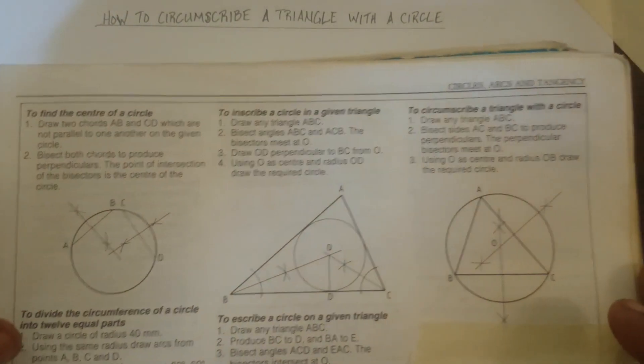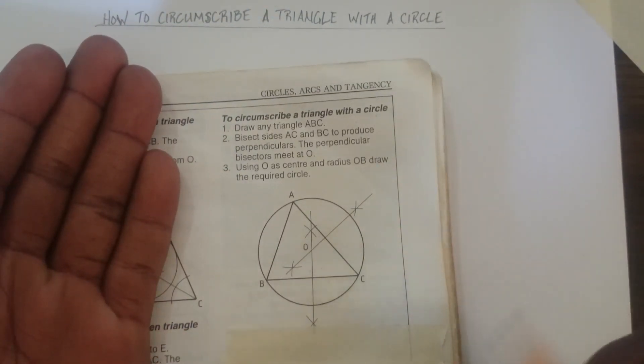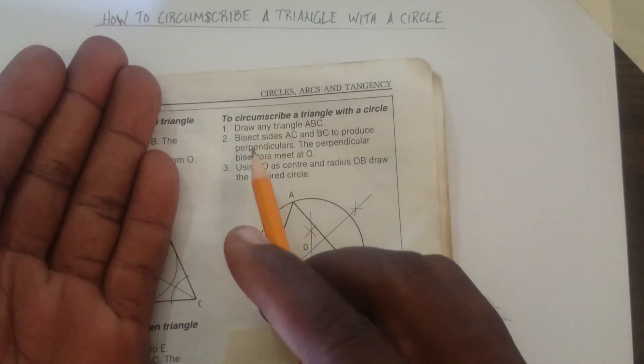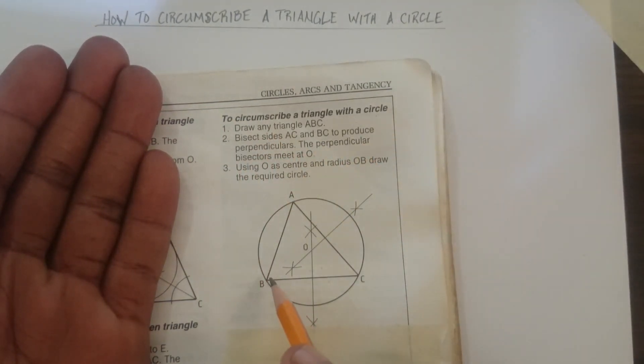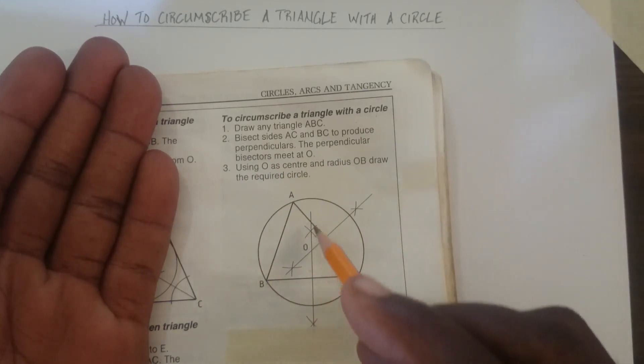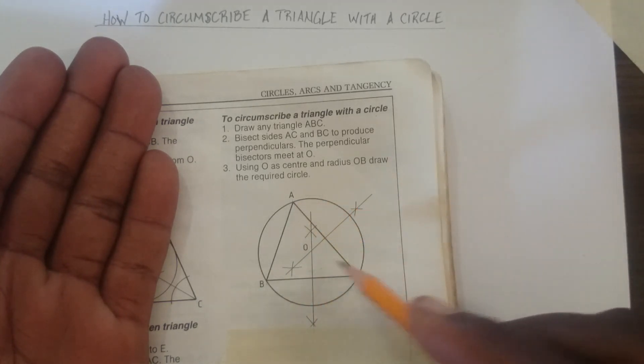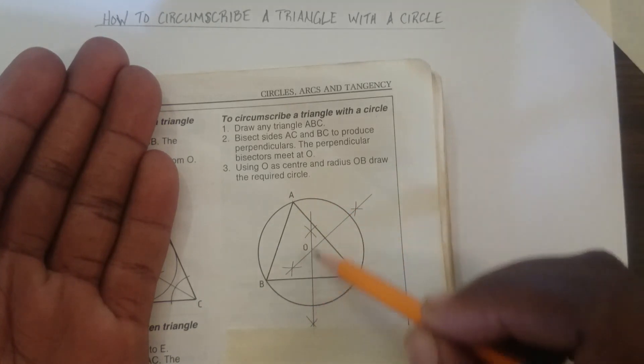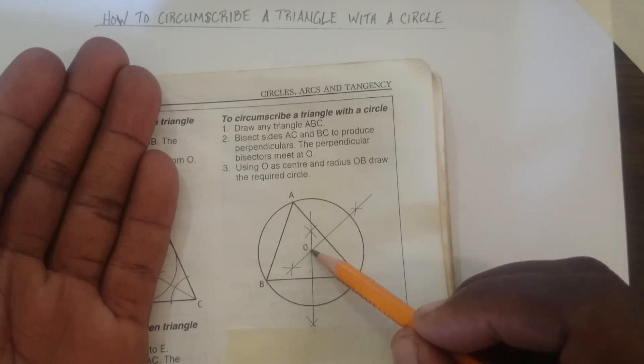Next thing we have to do is bisect sides AC and BC to produce perpendiculars. So we're going to bisect sides BC and AC. And wherever those two bisection lines meet, we're going to put O.